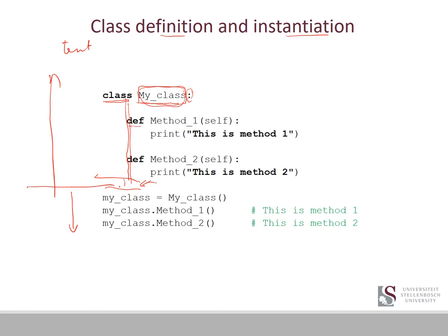Method one and method two are defined with 'def', each taking 'self' as a parameter, followed by a colon and indented code. Method one prints 'This is method one' and method two prints 'This is method two'. That is the full class definition — MyClass simply contains these two member methods.